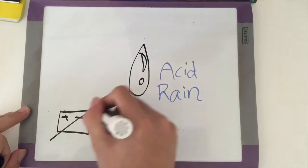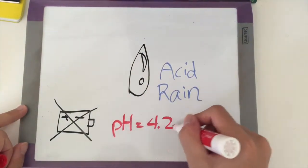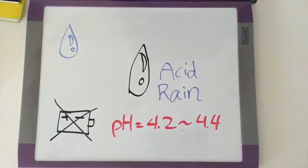Acid rain has a pH between 4.2 to 4.4, whereas normal rain has a pH around 5.6.